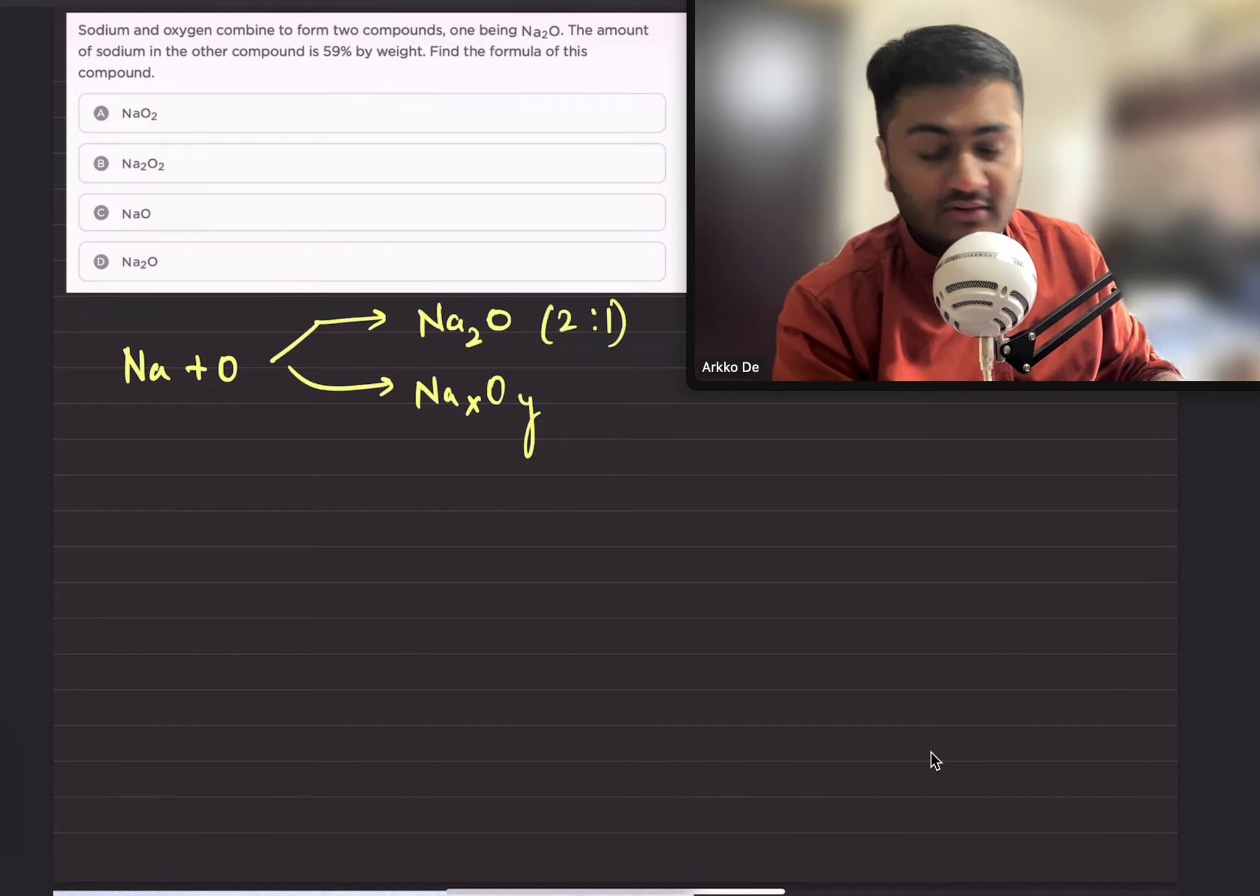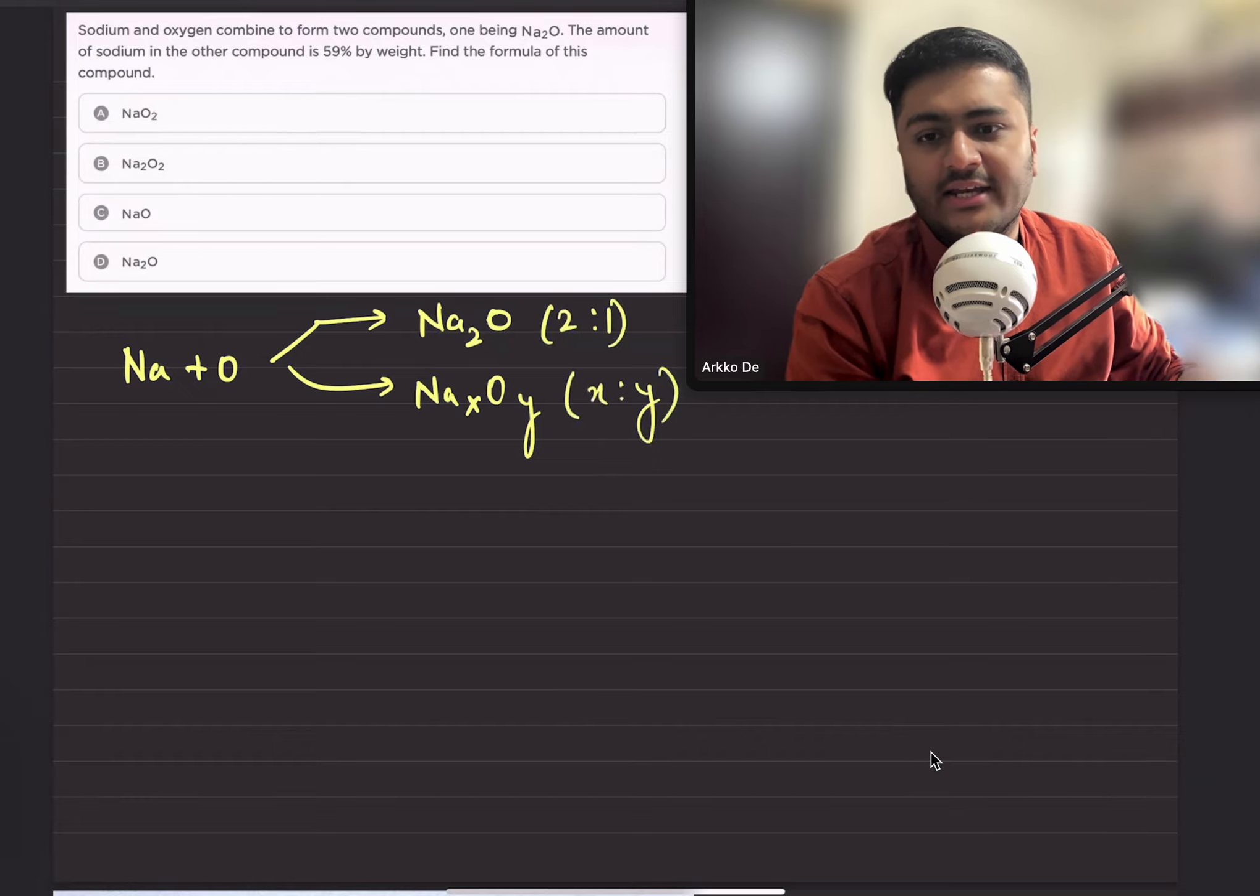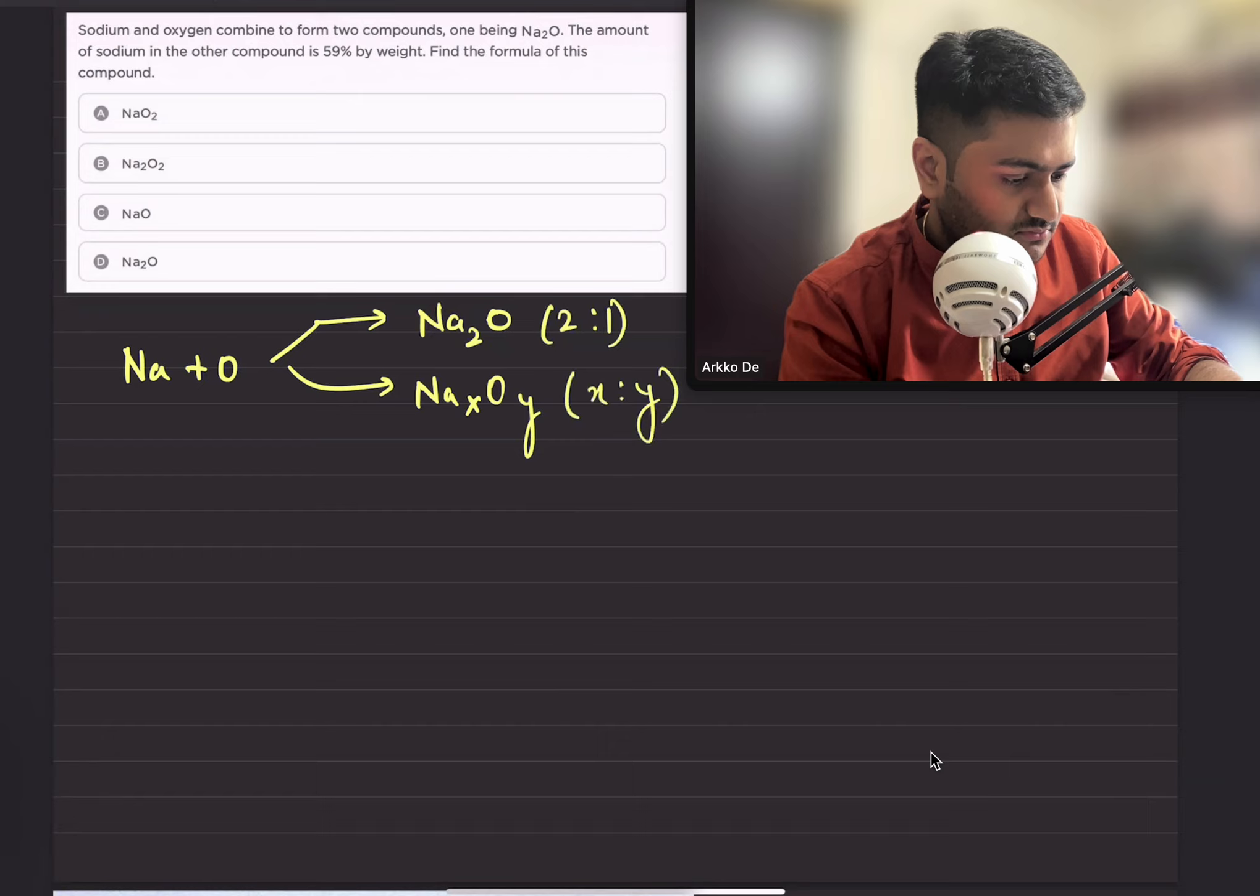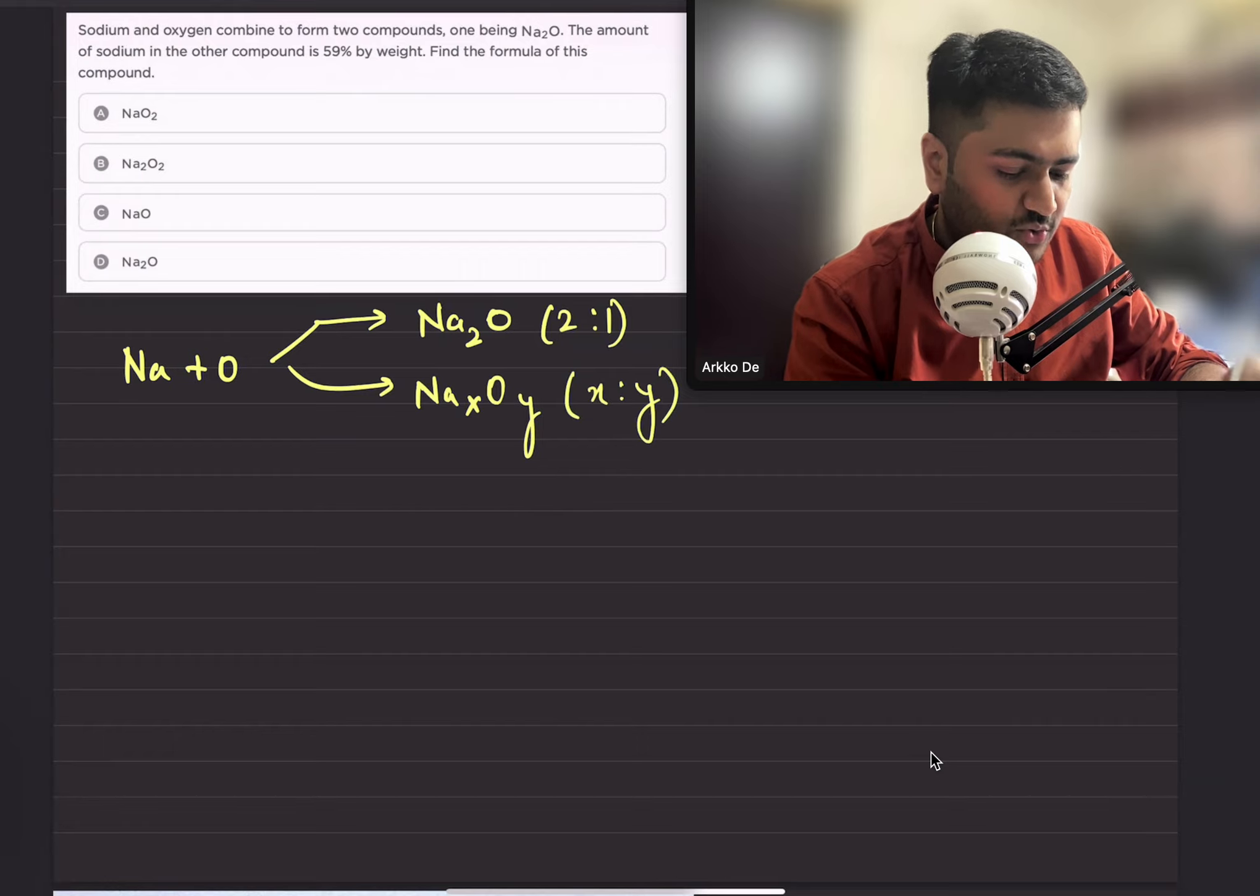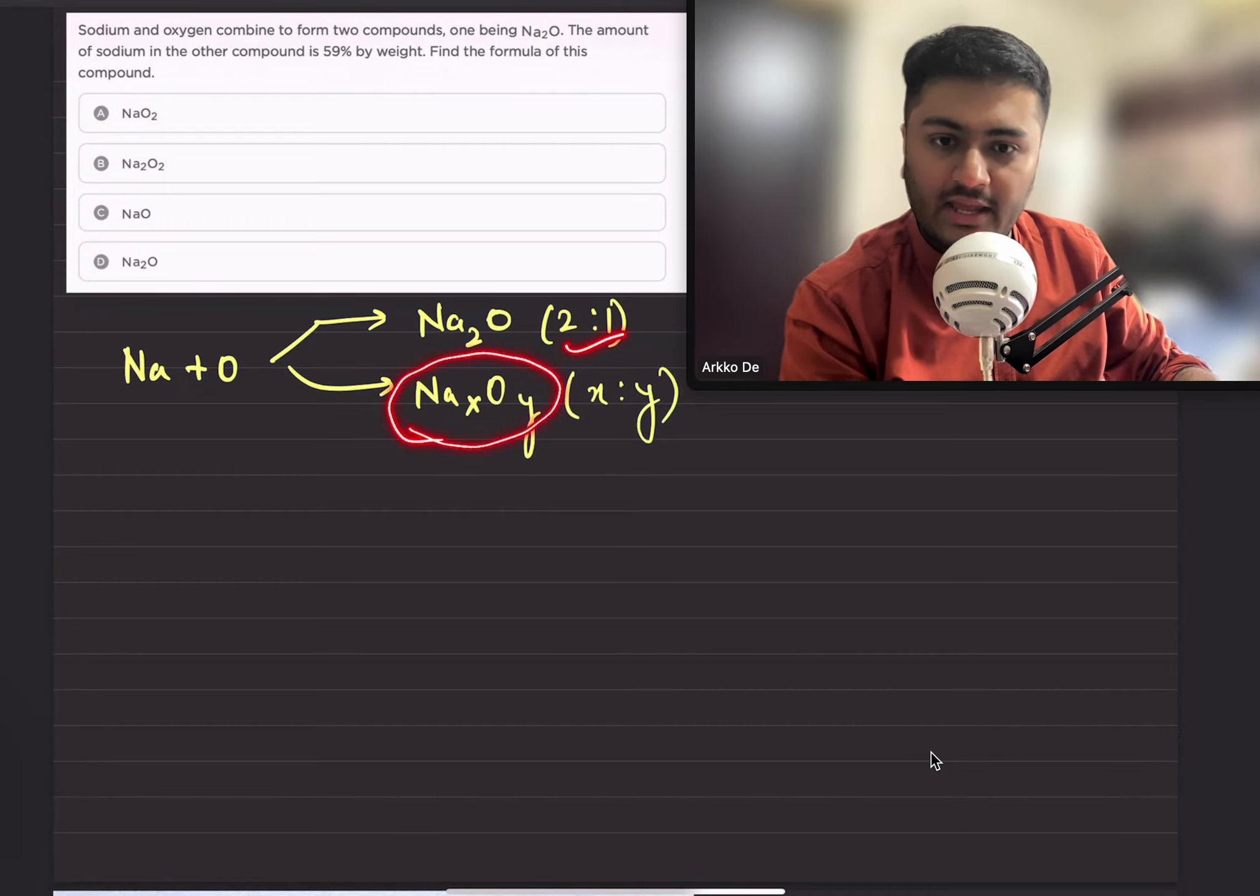Na2O, sodium and oxygen are in the ratio 2:1. This ratio is the molar ratio. And for the other compound, sodium and oxygen are in the ratio x:y, which is also a molar ratio. We need to find the formula of this compound. We have been given that the amount of sodium in the other compound (Na_x O_y)